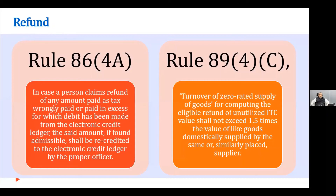For zero-rated supply of goods, they have introduced an explanation saying that the eligible refund of unutilized ITC shall not exceed 1.5 times the value of like goods. How this will play out for exporters and whether it is right for the government to introduce this provision remains to be seen. But these are some of the amendments made over a period of time.